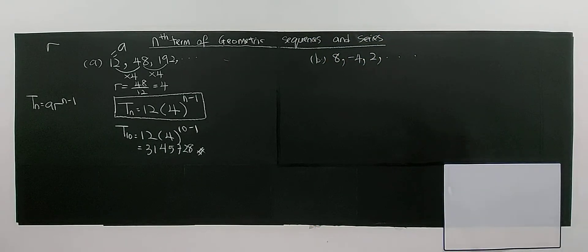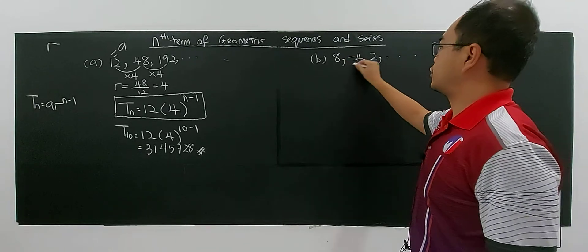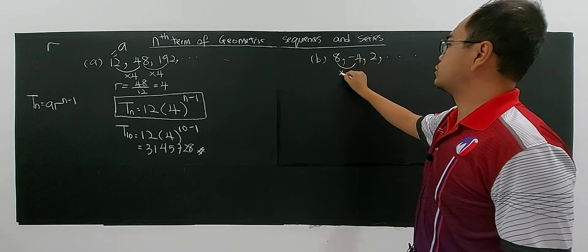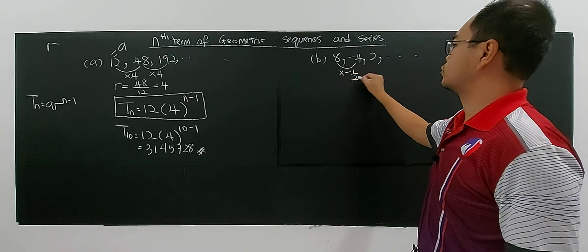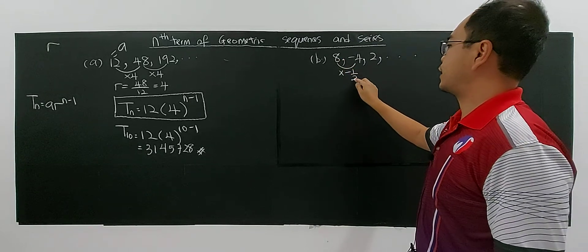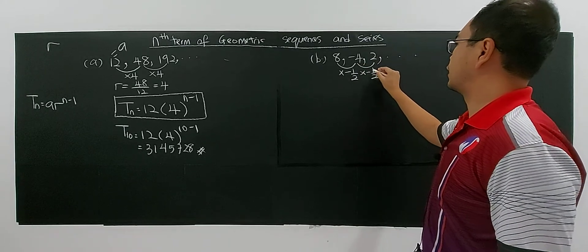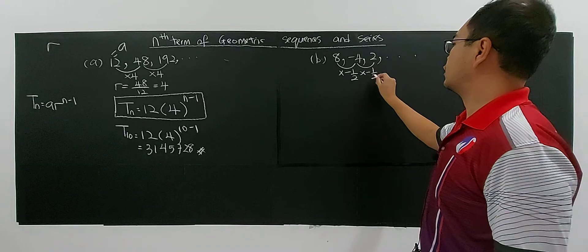Same thing happened for this. It's also a geometric sequence. Why? Because you can see that they keep multiplying by negative 1 over 2. 8 divided by negative 2 gives you negative 4.